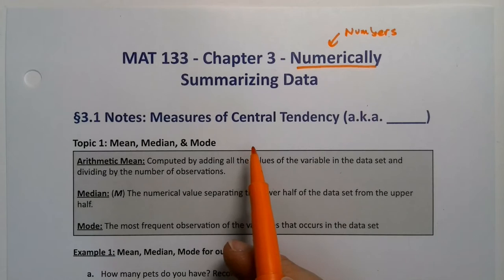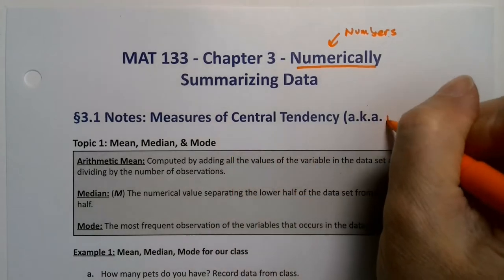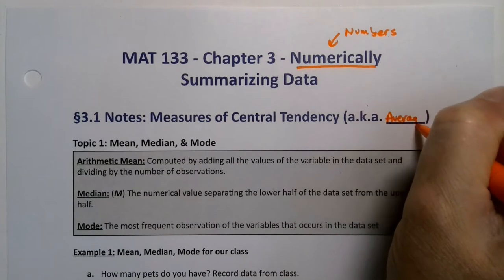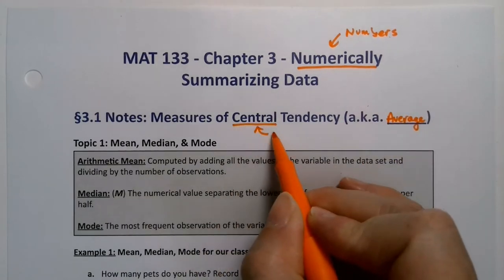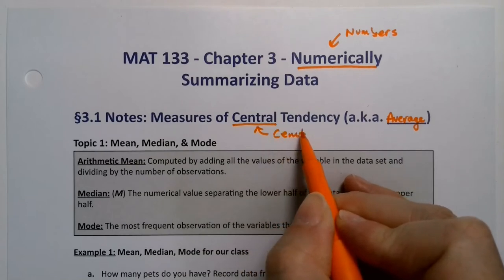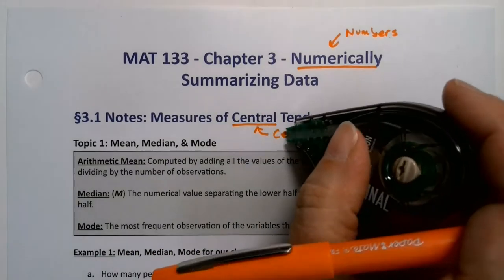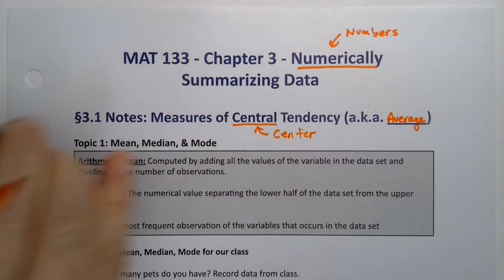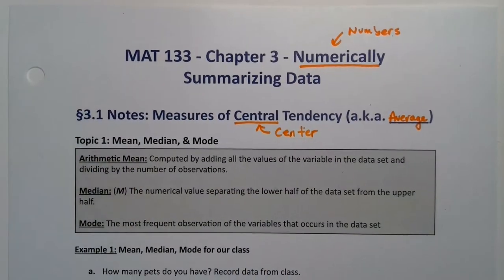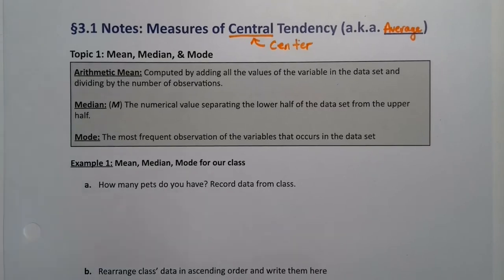The first topic is Section 3.1: measures of central tendency. In other words, averages — because an average tells us where the center is. So measures of central tendency are measures of average.